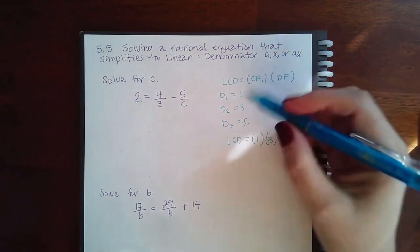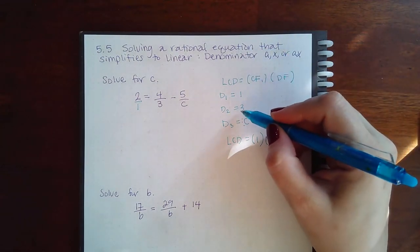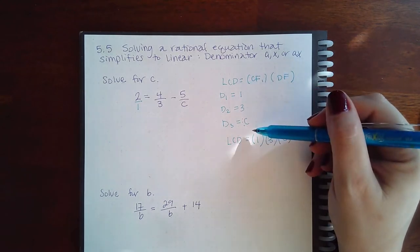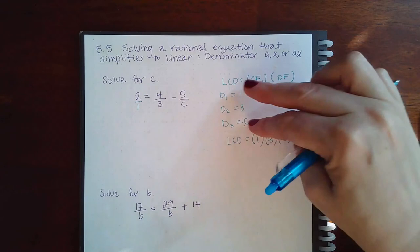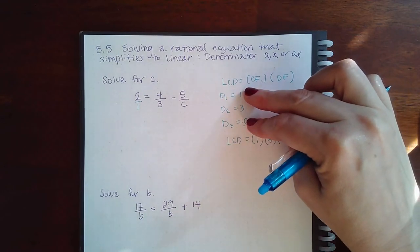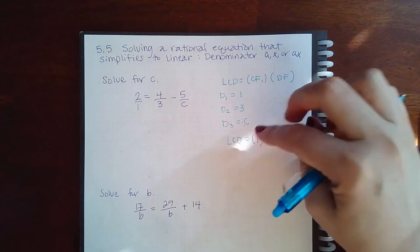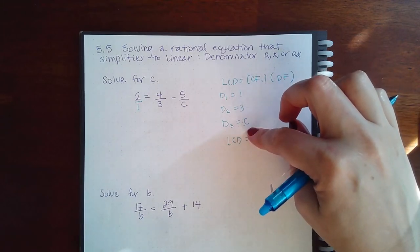I mean, it is because you can always do 3 times 1, and it's still 3. But the common factors don't have to be in common with all three. It could just be that two factors have something in common, and that gets listed under the common factors.